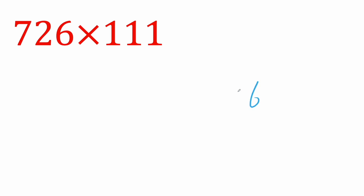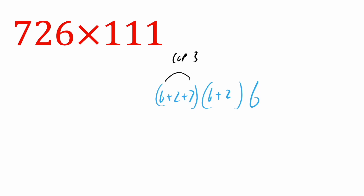So again, we take our six. The next one, we shift one place: six plus two. And we do the same thing: six plus two plus seven. Again, we're capping at three, and we're going to see why that's going to be important in the next type of problems. Then we shift another place, so instead of six starting, we start with two: two plus seven. And our final number is seven.